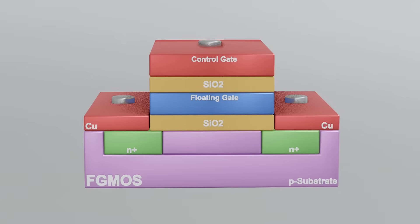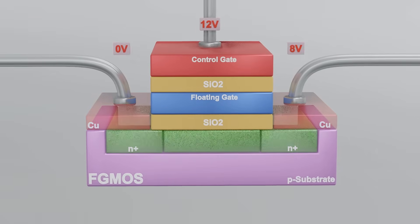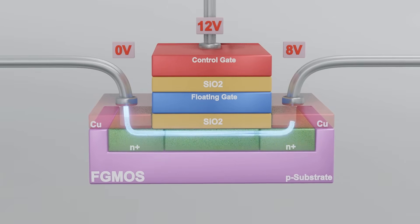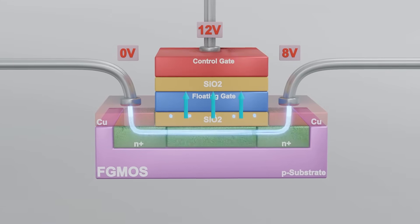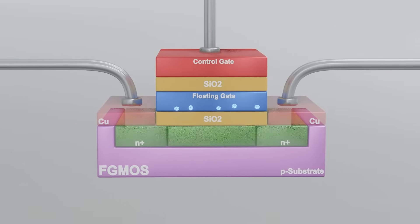But how does it write the data? To store electrons, a relatively high voltage is applied across the transistor which increases the velocity of electrons and the electric field from the control gate traps electrons in the floating gate.